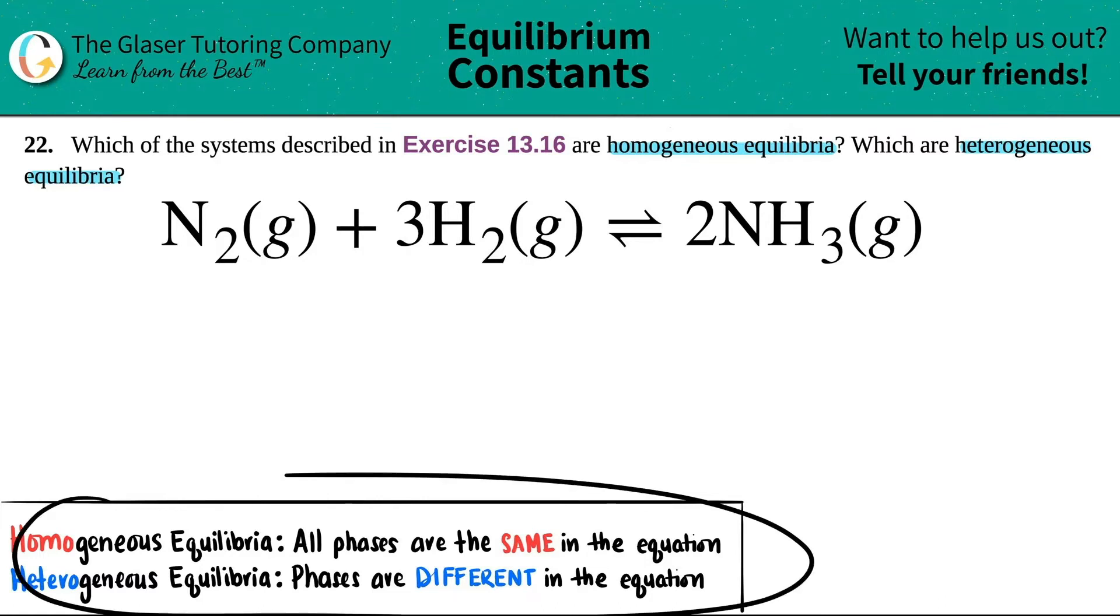Well, here are the rules down here. If something is classified as a homogeneous equilibria, all the states or the phases are exactly the same throughout the whole balanced equation. But if you have a heterogeneous equilibrium, those phases are going to be different in the equation.